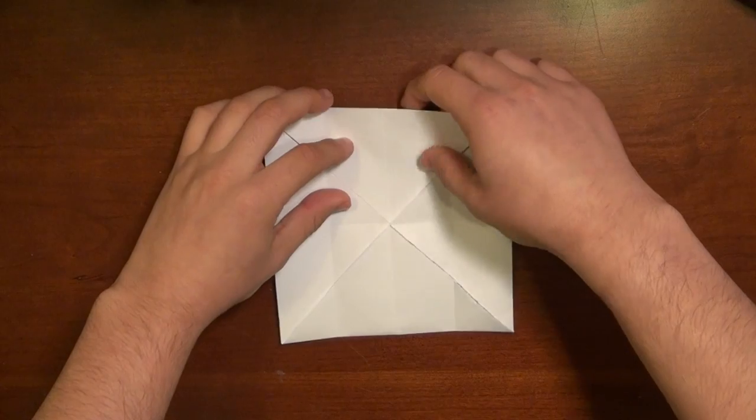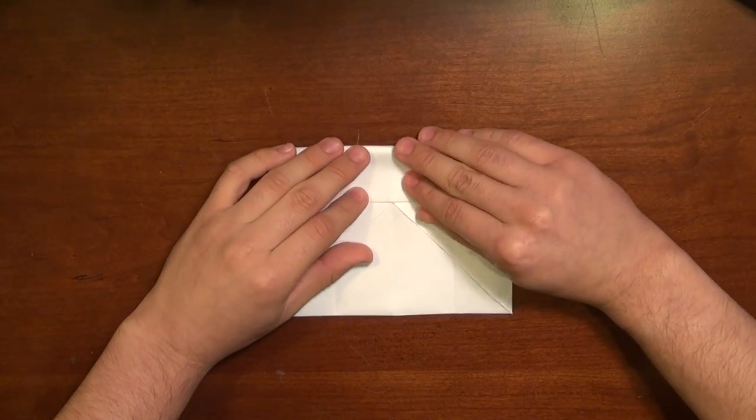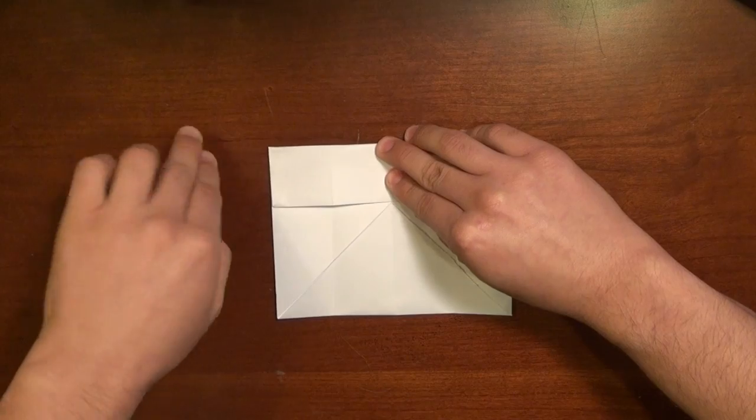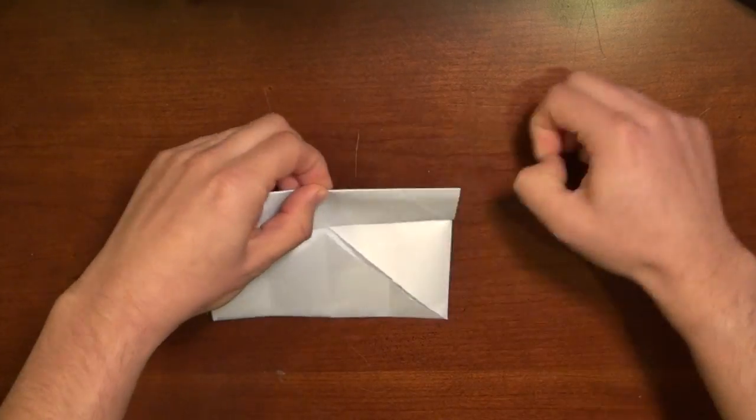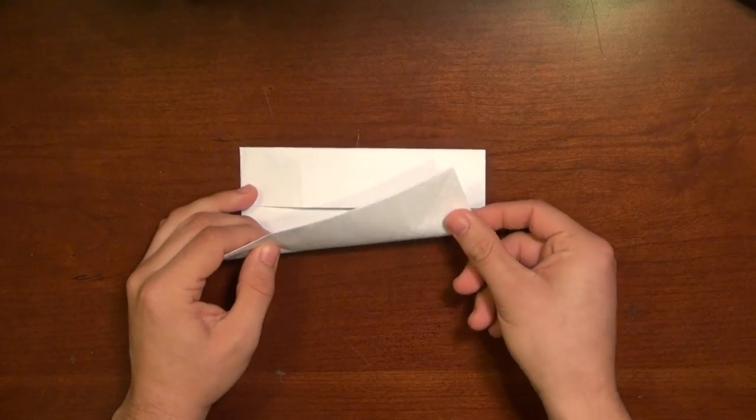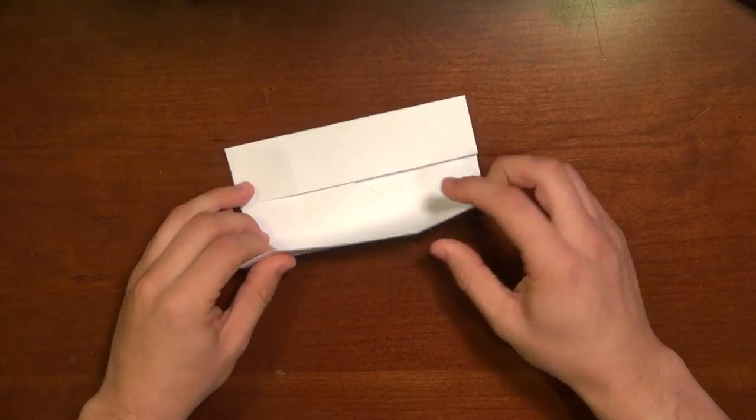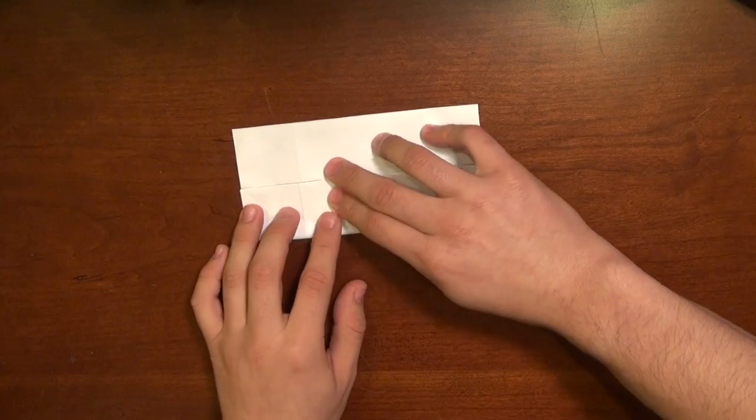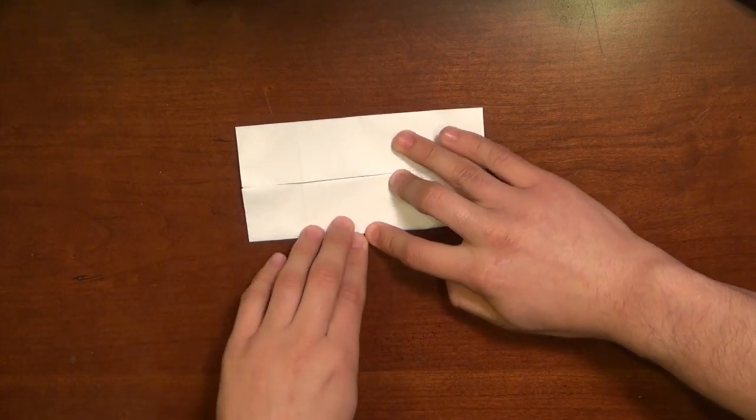Take the top edge, line it up with the middle, and then make a crease. You might have to round the paper off a little bit here if it's a little stiff. Line it up and crease it on the bottom.